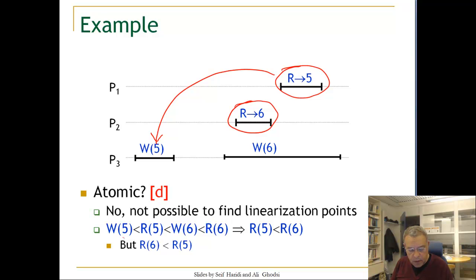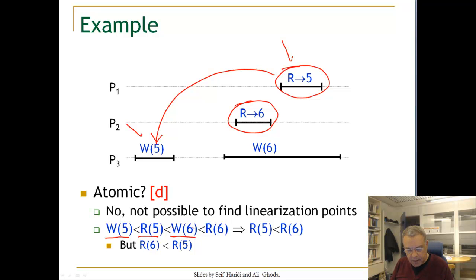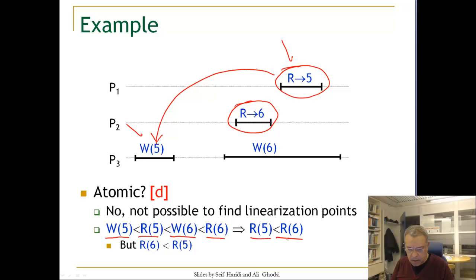We know that write-five precedes read-five, and read-five must happen before write-six, otherwise the read of five should have read six. And we know that reading six must happen after writing six. Therefore we conclude that read-five should come before read-six in the total ordering. But we can also see from the execution that read-six is before read-five, and that is a contradiction — so it is not possible to find a linearization point.